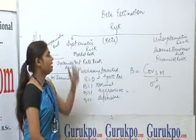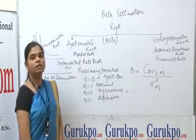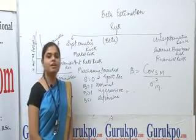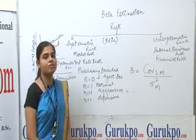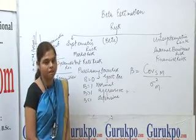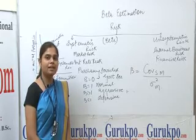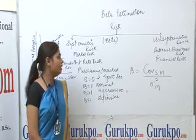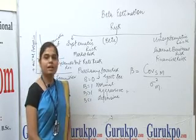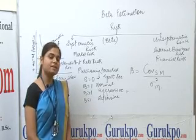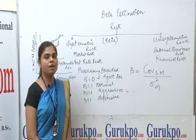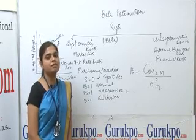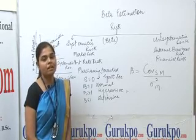The systematic risk of an individual security is measured in terms of beta. Beta is a Greek word, and it measures the sensitivity of a security to market movements, representing its systematic risk.